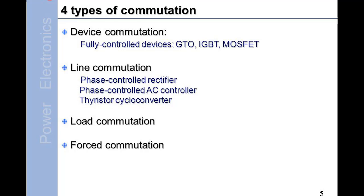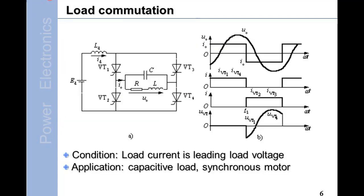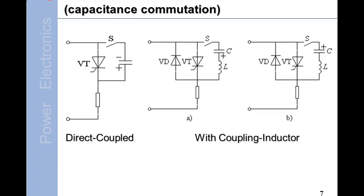Forced commutation and load commutation. Load commutation condition: load current is leading load voltage. Applications: capacitive load, synchronous motor. Forced commutation: capacitance commutation, direct coupled with coupling inductor.